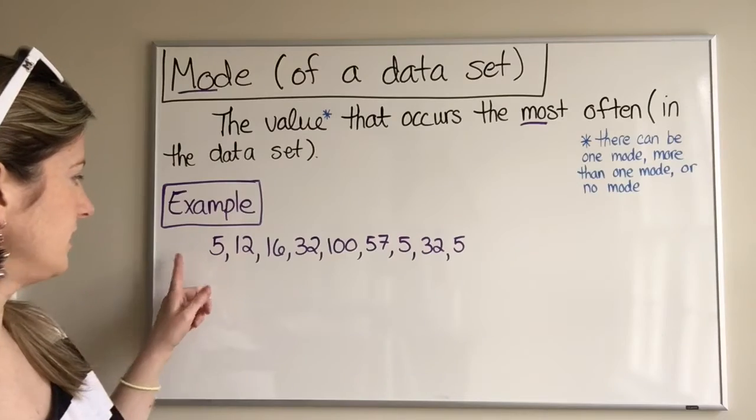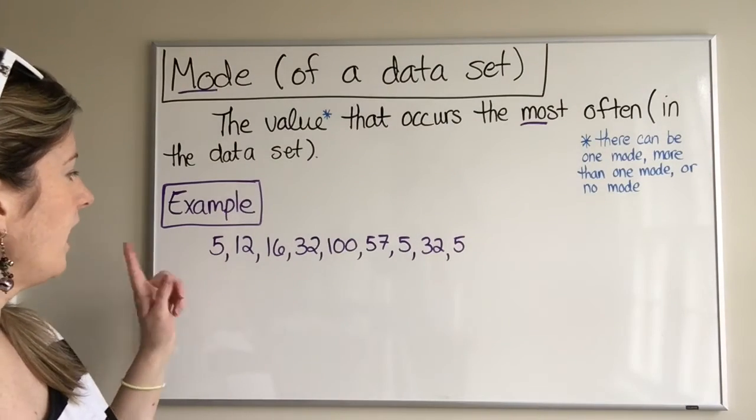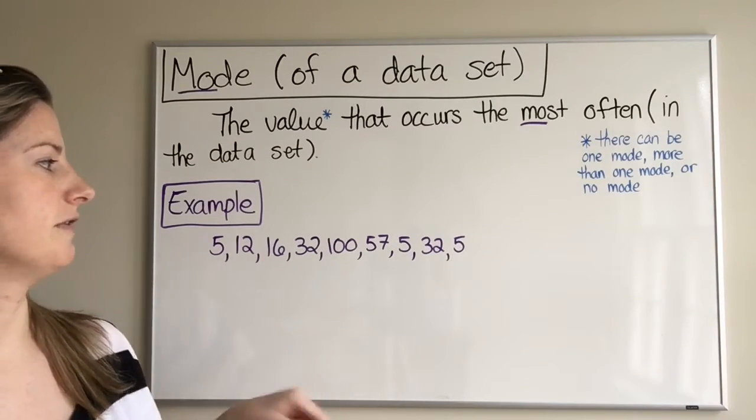So let's try an example. We've got a data set here: 5, 12, 16, 32, 157, 5, 32, 5.